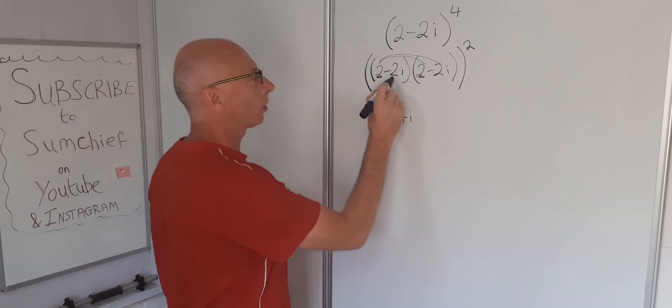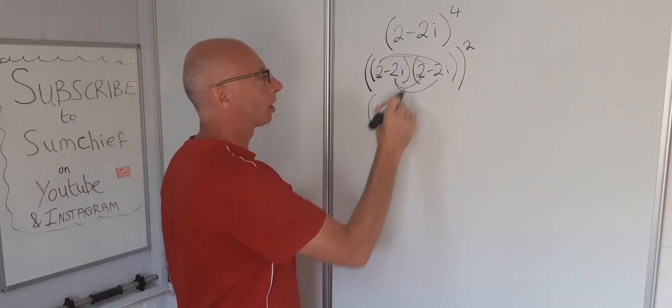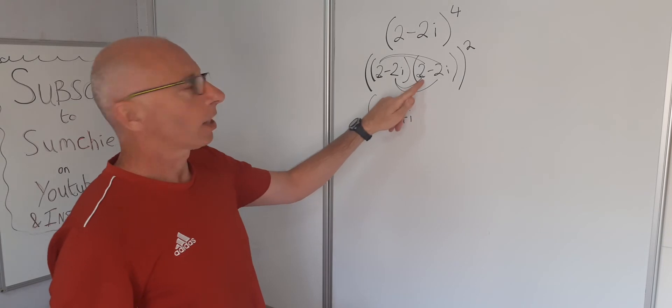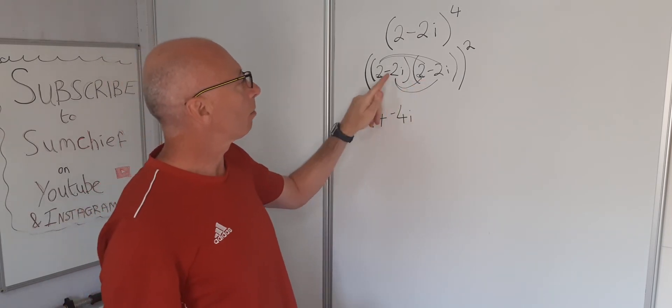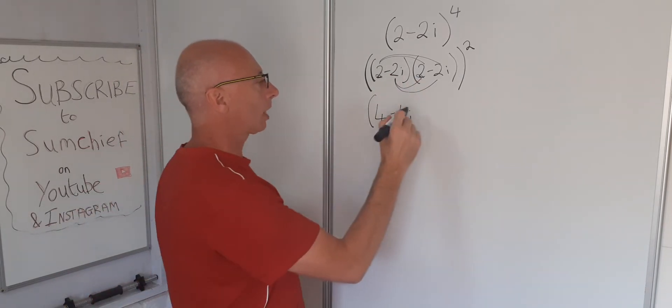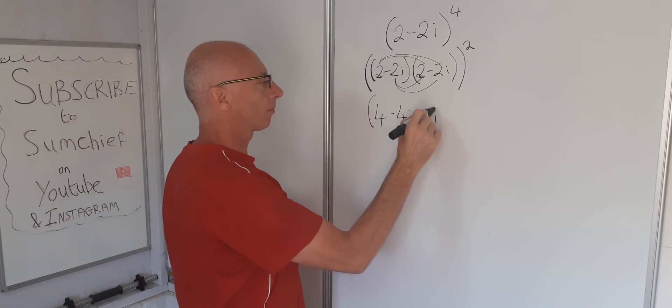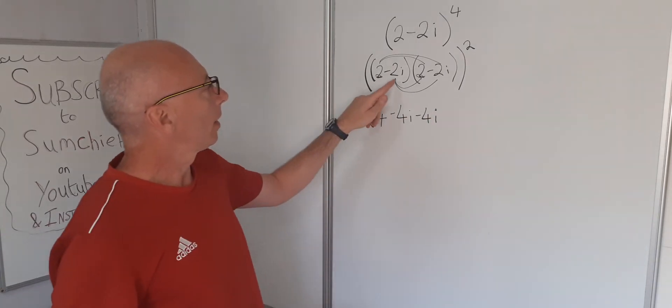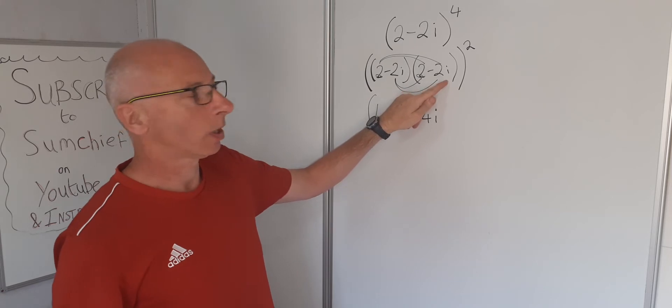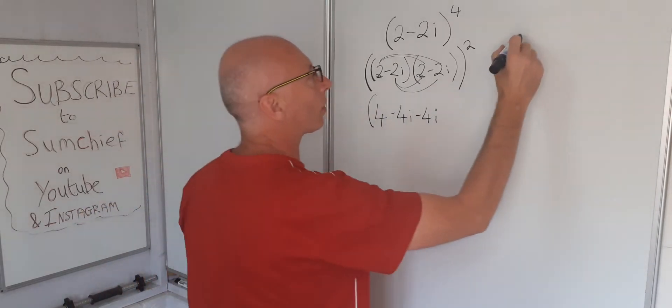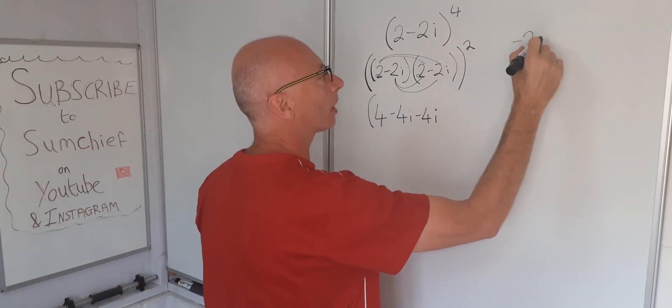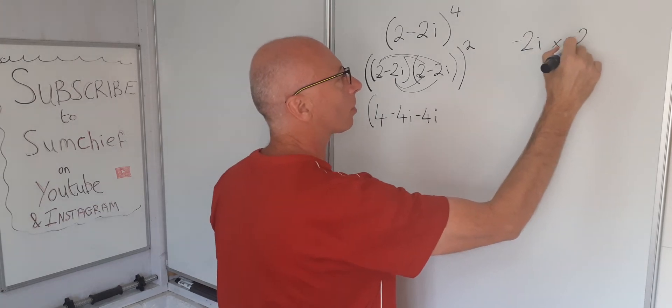Now we're going to take this one and foil it with these two. Minus 2i times 2 minus 2i. So minus 2i times 2, that's minus 4i. And then minus 2i times minus 2i. Let's just do that over here. So minus 2i times minus 2i.